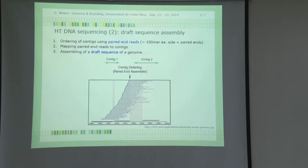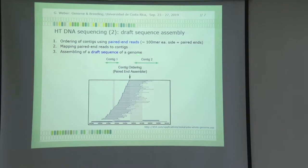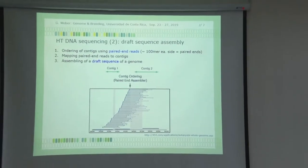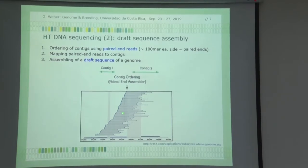When you have your contigs in the process of being assembled, you have to order them. We briefly talked about paired-end reads: typically you look at the sequences of the ends of each read, and you pick about a 100-mer. That is a reasonably safe amount of data to make fine homologies at very high confidence. You have mapped paired-end reads, and once you have all this, you can set up a draft sequence — not a perfect sequence, but it works.